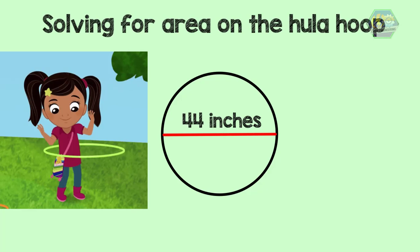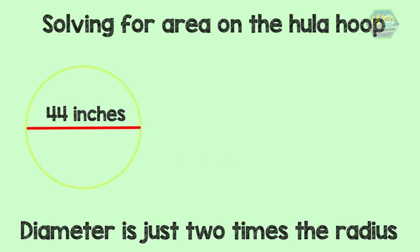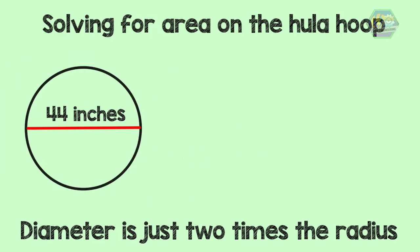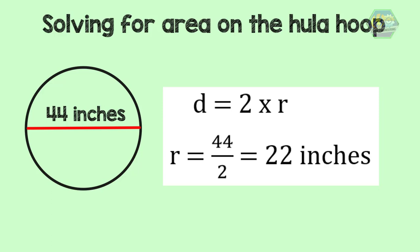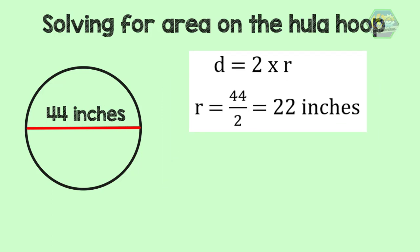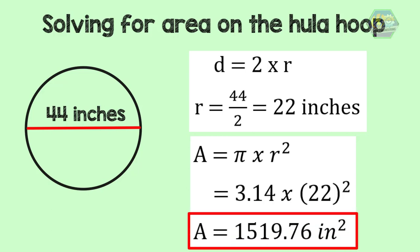In this problem, a diameter of 44 inches is given, but the area formula uses radius. So how do we solve it? Remember that the diameter is 2 times the radius. Therefore, to get the radius, we divide the diameter by 2: 44 ÷ 2 = 22. We now have a radius of 22 inches. Using the formula A = πr²: A = 3.14 × 22² = 3.14 × 484 = 1519.76. Therefore, the area of the hula hoop is 1519.76 square inches.